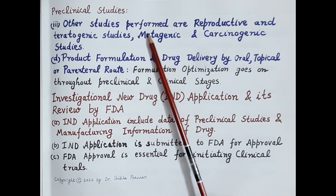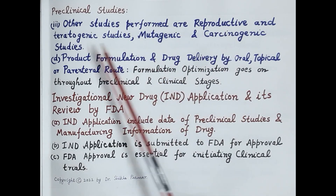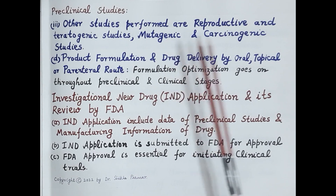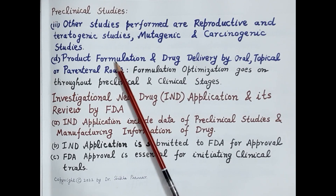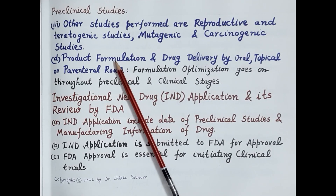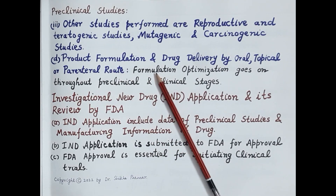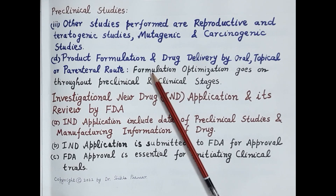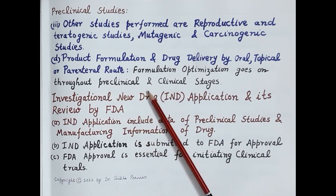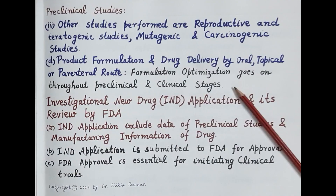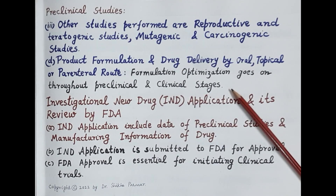Other studies performed during preclinical studies include reproductive and teratogenic studies, and mutagenic and carcinogenic studies. Apart from this, a product formulation prototype is also identified — whether the drug is to be delivered by oral, topical, or parenteral route. The aim of formulation optimization is to ensure that the drug is delivered to the proper place at the right time and in the correct concentration. Formulation optimization continues throughout the preclinical and clinical stages.